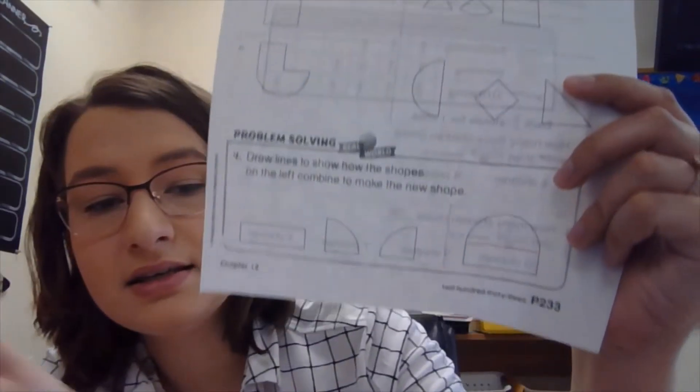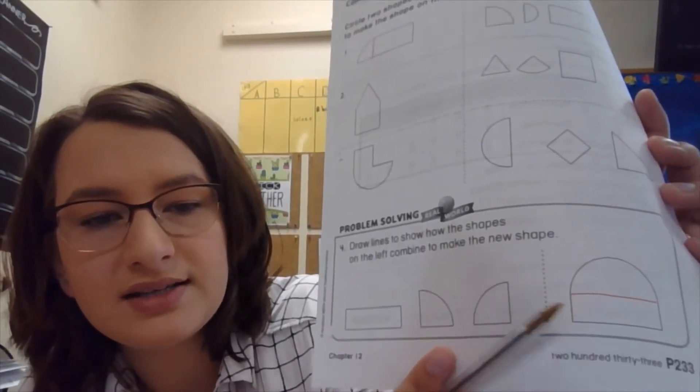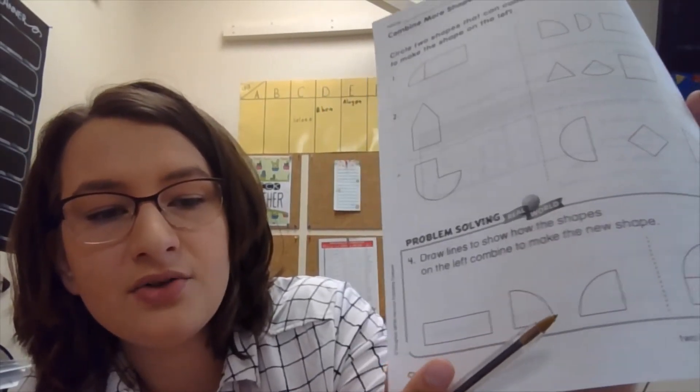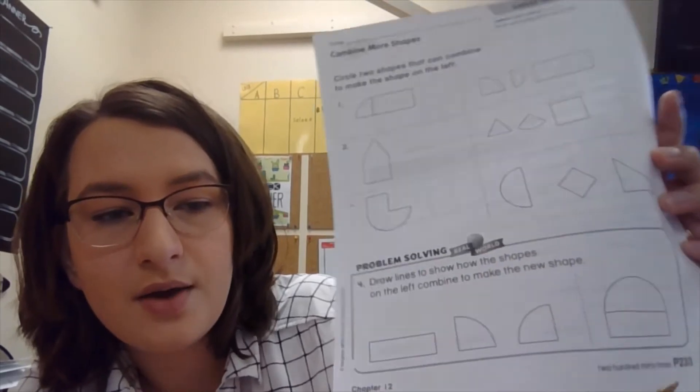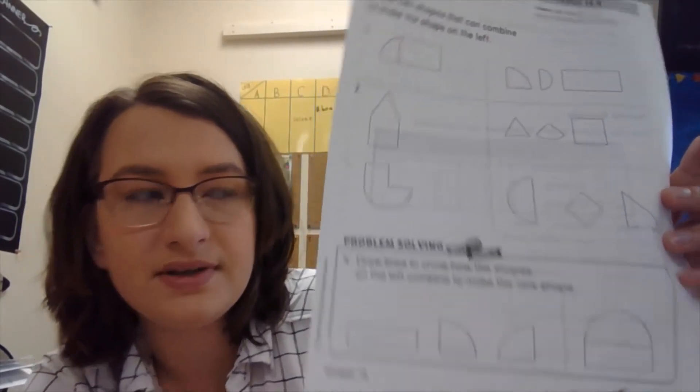Next, draw lines to show how the shapes on the left combined to make the new shapes. So exactly what I was telling you before. How could you combine these shapes to make a new one? Well, I could make that rectangle like this, right? Can you see that? So I drew that line to show the rectangle and then I need to draw a line to show how these two fit together. So I would draw a line right down the middle there to show how those could fit together.